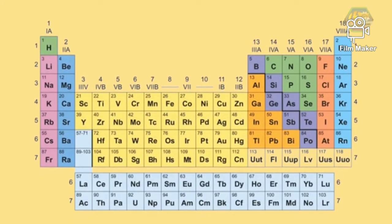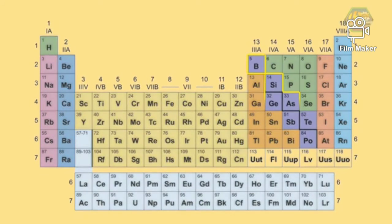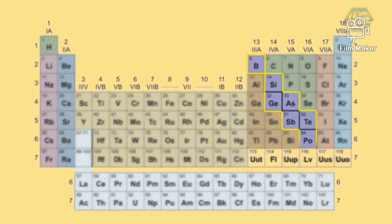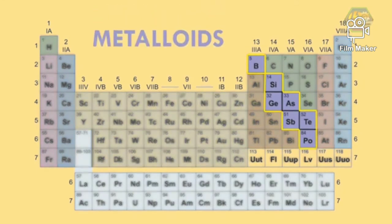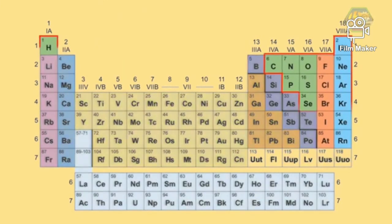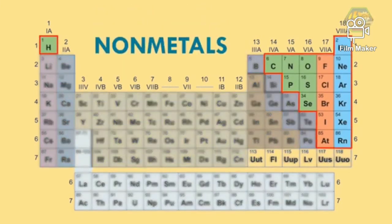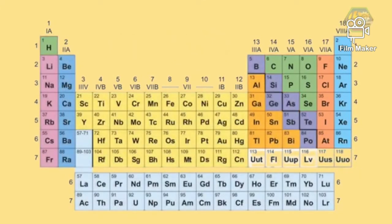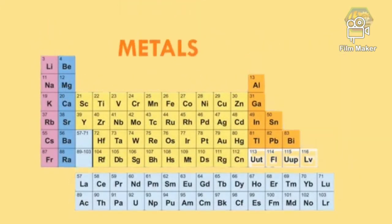The elements boron, silicon, germanium, arsenic, antimony, tellurium, and polonium are called metalloids. Elements above the line formed by metalloids are non-metals, including hydrogen. And lastly, the rest are all metals.